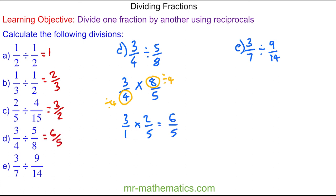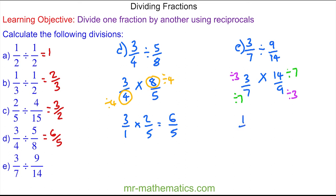For question e, we change the divide to times. The reciprocal of nine fourteenths is fourteen over nine, so we have three sevenths multiplied by fourteen over nine. We can cross simplify the three and nine, and the seven and fourteen, giving us one over one multiplied by two over three, which is two thirds. Thank you for watching — I hope you found that useful. Thanks again and take care.